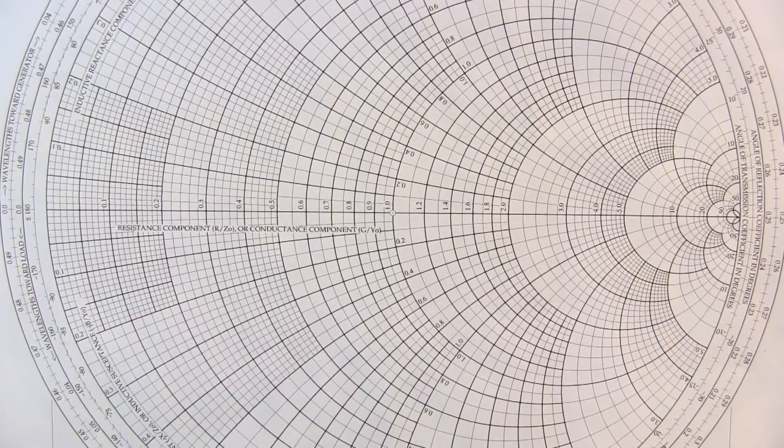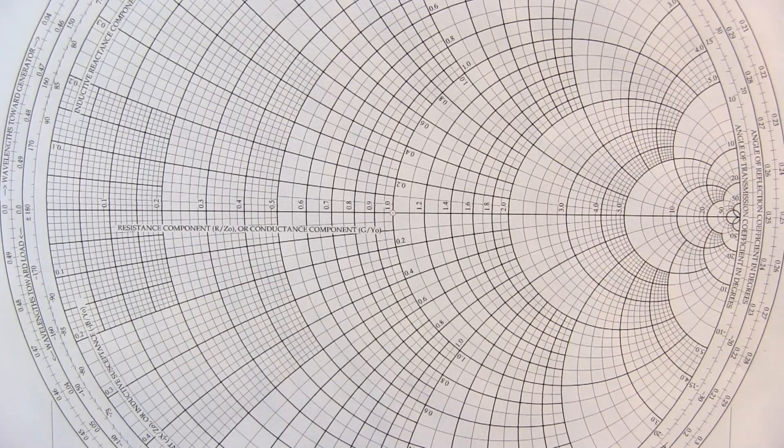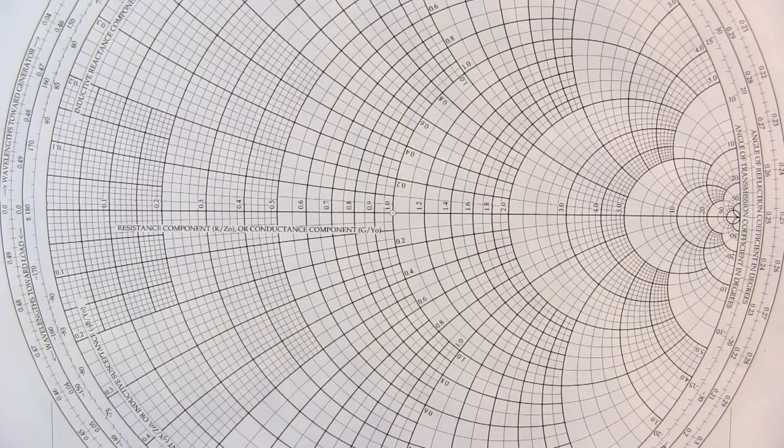The Smith chart is a graphical tool that is very useful to help solve a wide variety of RF and microwave complex impedance matching and transmission line problems. In this short basics video, we're going to take a quick look at how complex impedance is represented and illustrated on the Smith chart.